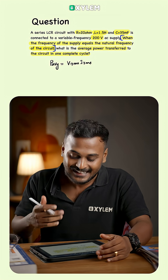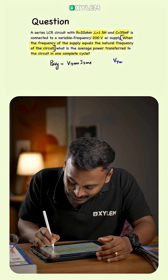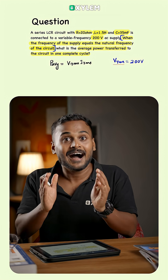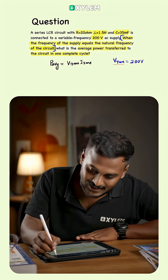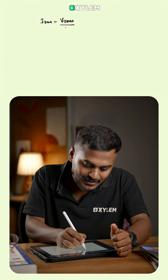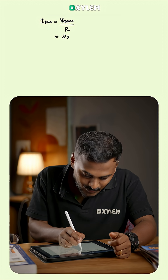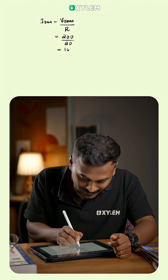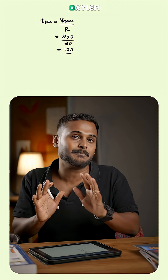Because in the circuit at resonance, the resistance is what matters. So, the RMS value of voltage is 200V. Irms equals Vrms divided by resistance. Vrms is 200V and resistance is 20 ohm, so Irms equals 10A.